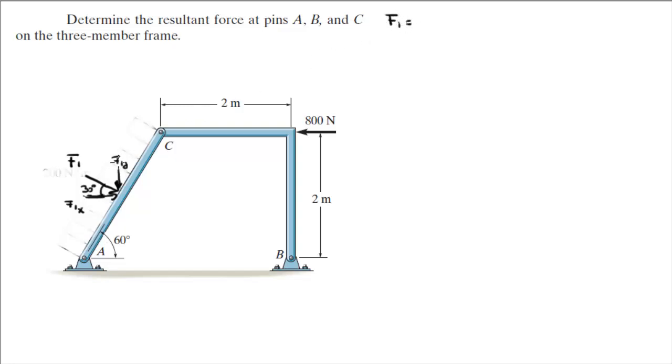F1 is equal to the distributed load strength which was 200 per meter times the length of the rod AC. Now, we're not given the length directly but we're given this angle and we're given this height of 2 meters same as here.